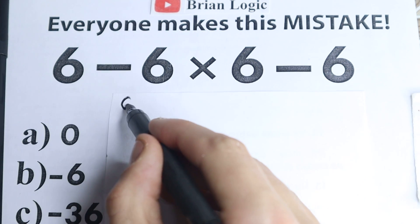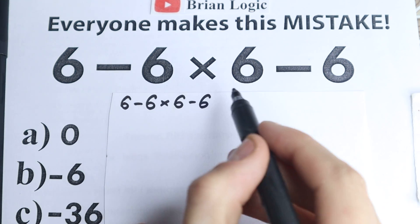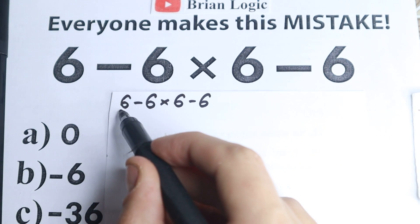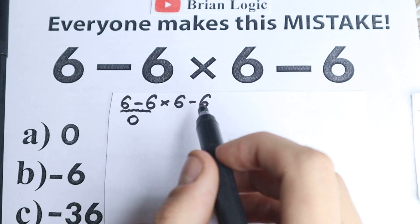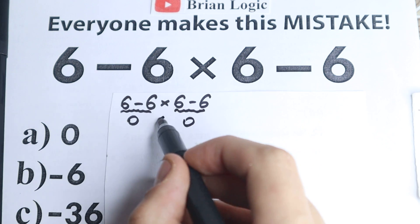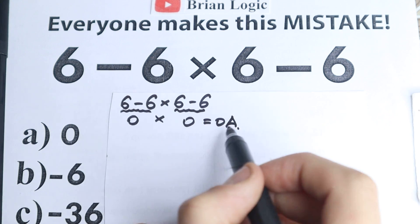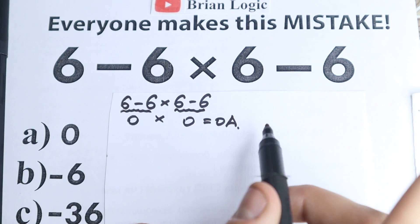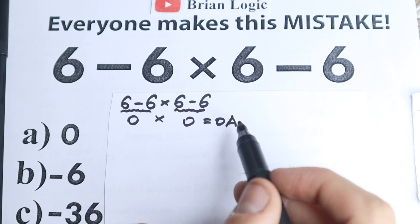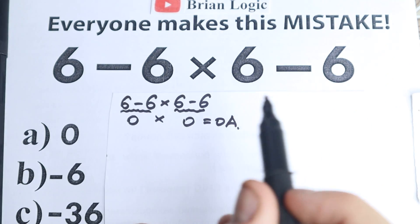So here is our question, we have 6 minus 6 times 6 minus 6. One part of students solve this question like that: 6 minus 6 equals 0 from left to right, and 6 minus 6 equals 0 as well, and with multiplication, 0 times 0 equals 0. This is option A. But in math we can't solve this question chaotically, we can't jump from left to right. It is a very big and huge mistake.